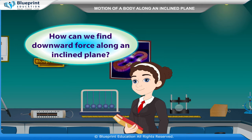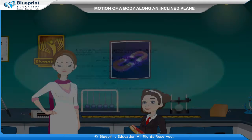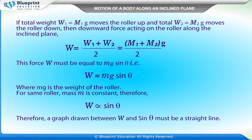How can we find the downward force along an inclined plane? If total weight W1 = M1g moves the roller up, and total weight W2 = M2g moves the roller down, then the downward force acting on the roller along the inclined plane is W = (W1 + W2) / 2 = (M1 + M2)g / 2.